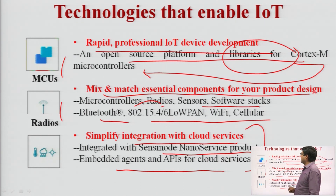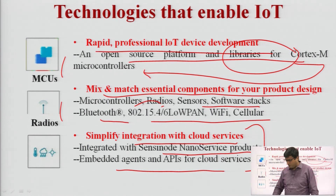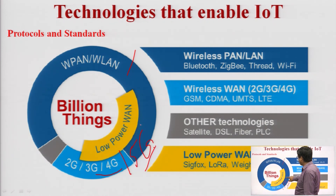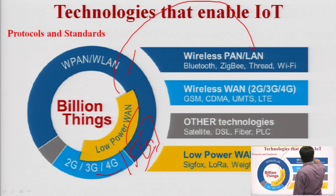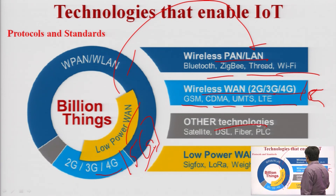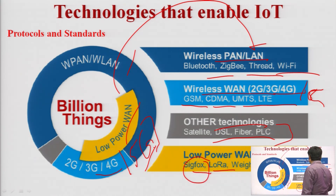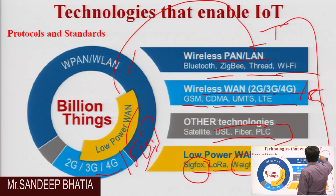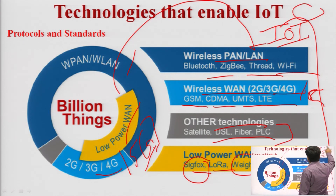Protocols and standards used in IoT systems include wireless personal area networks: Bluetooth, ZigBee, Thread, Wi-Fi; wireless WAN: 2G, 3G, 4G, 5G, GSM, CDMA, UMTS, LTE; and other technologies: satellite, DSL, fiber, PLC, SigFox (used in European countries), long-range networks, Weightless, and NB-IoT (Narrowband IoT). All these technologies can enable any Internet of Things system.